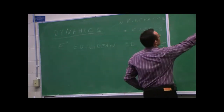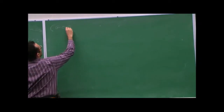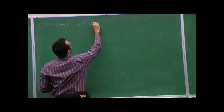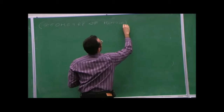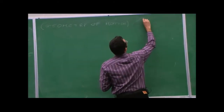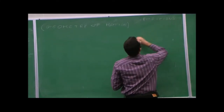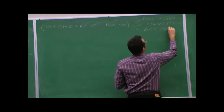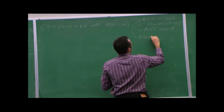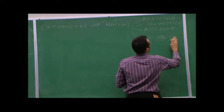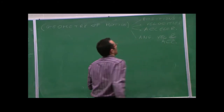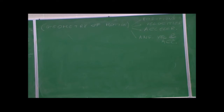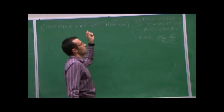Kinematics is also what we call the geometry of motion — it's the part that represents motion, being completely blind about why things are evolving the way they are. I don't need to know what is causing the motion. Here, you care about positions, velocities, accelerations, and also angular velocities and accelerations. There's nothing telling us why things are moving the way they're moving.